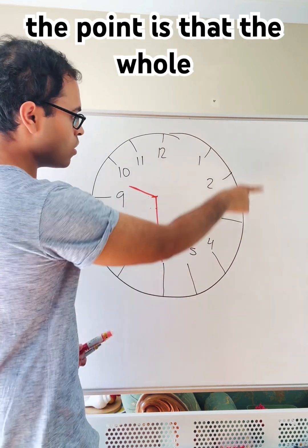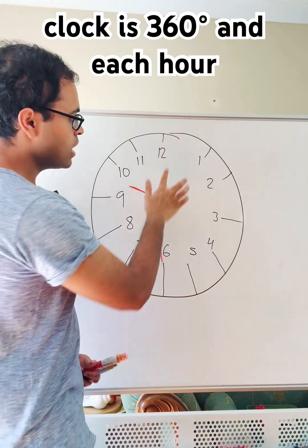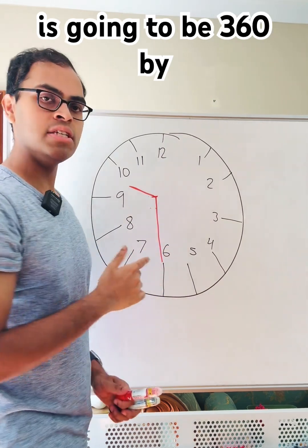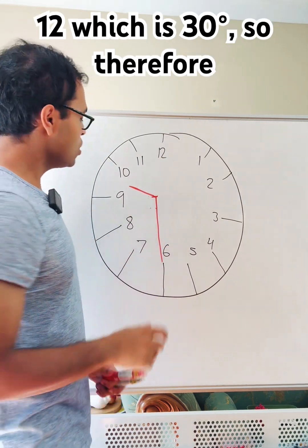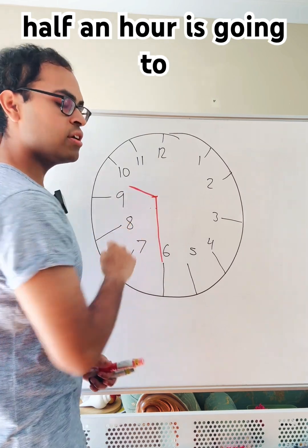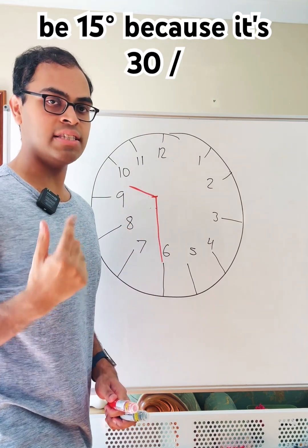Well, the point is that the whole clock is 360 degrees, and each hour is going to be 360 by 12, which is 30 degrees. So therefore, half an hour is going to be 15 degrees, because it's 30 over 2.